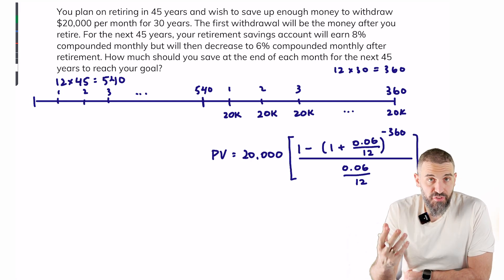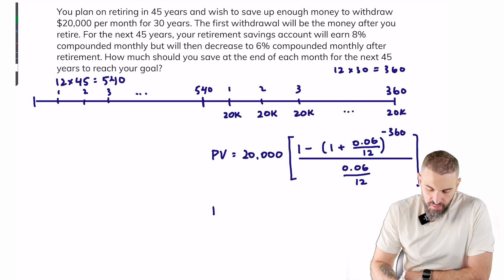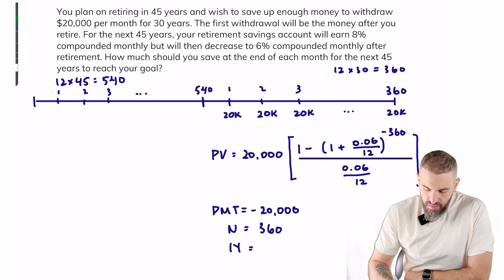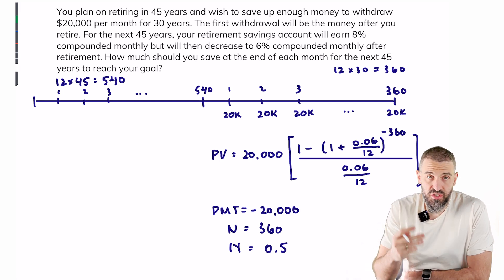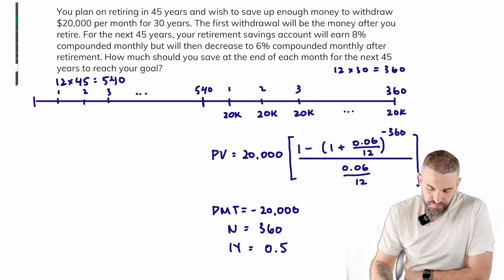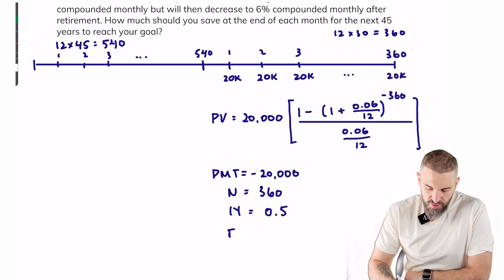Now if you're doing this on a financial calculator, your payment would be $20,000, your N would be 360, your rate would be 0.5, which is 6% divided by 12.